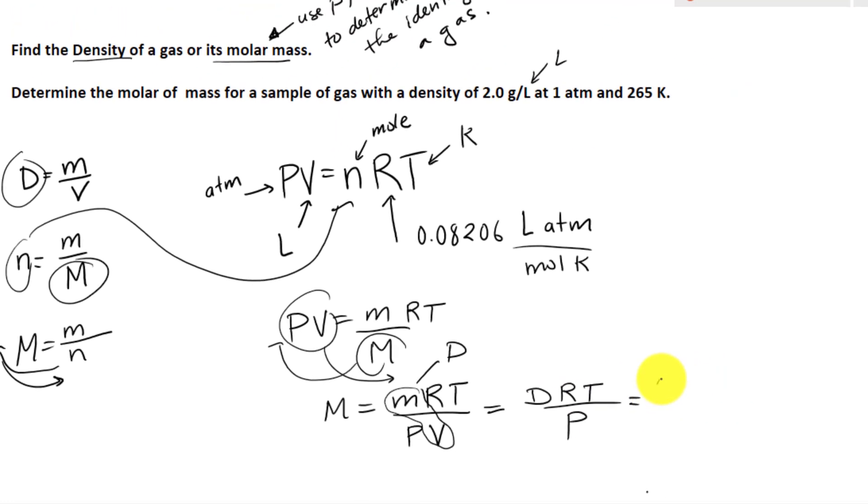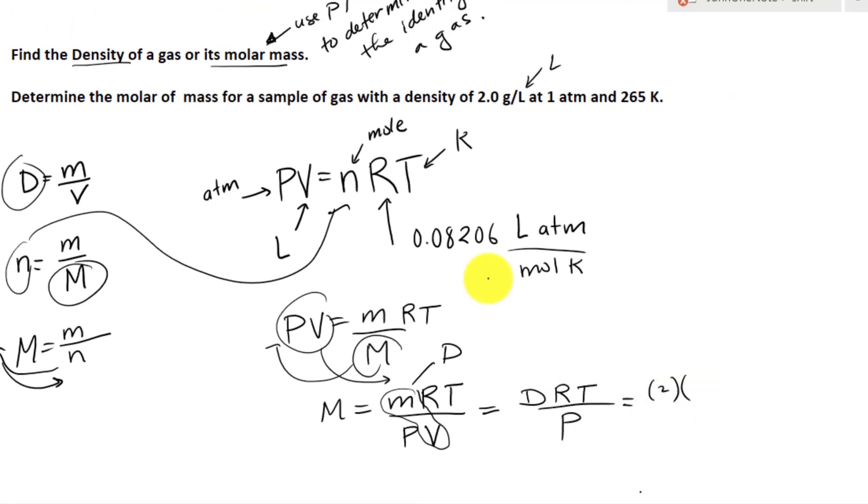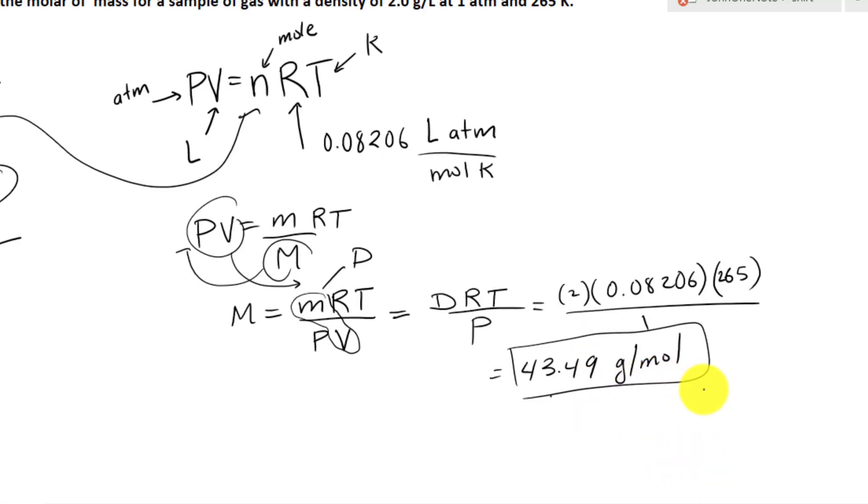Let's plug this in. We have the density equal to 2. The R constant is 0.08206. Multiply by the temperature, which is 265 Kelvin, and divide by 1 atm, which is pressure. Now let's plug this into our calculator. What we have here is 43.49. Molar mass is always defined as the number of grams per one mole of that substance.